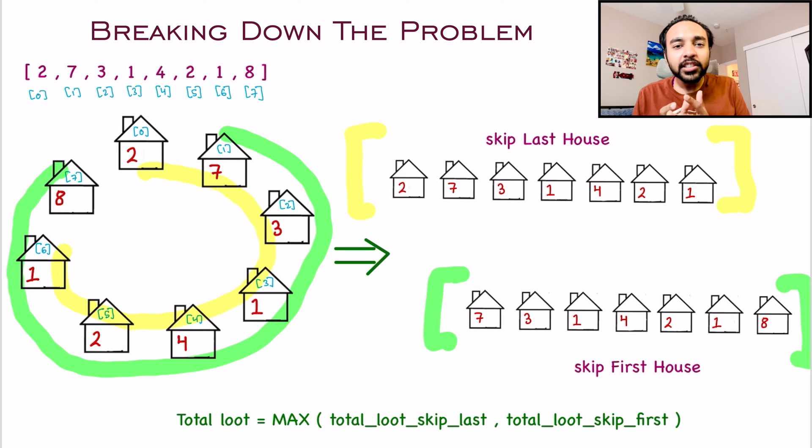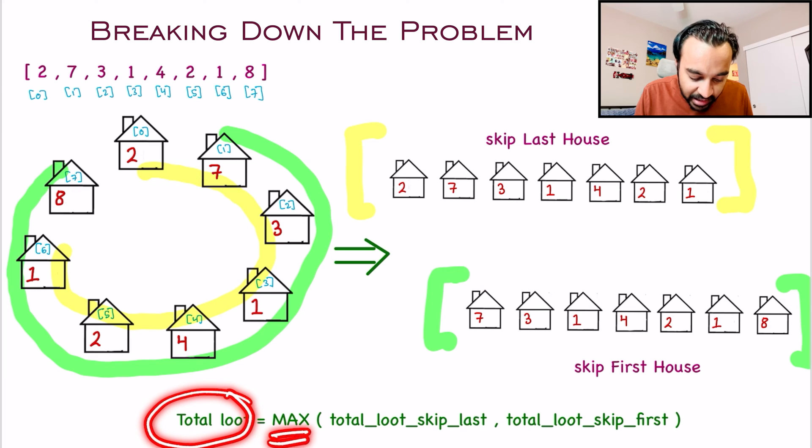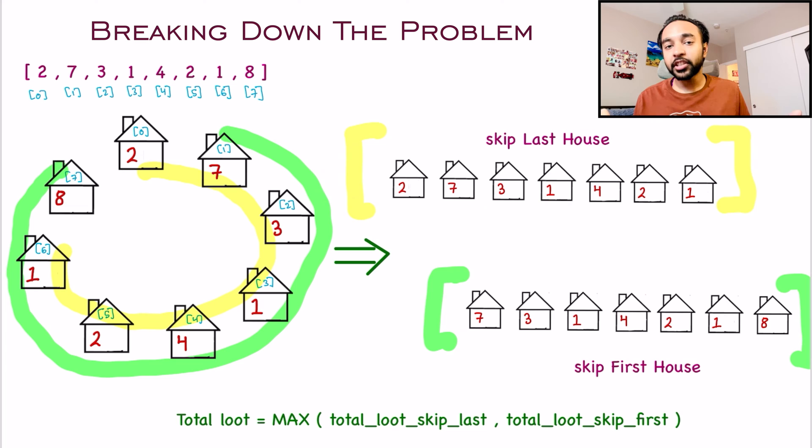So that is what makes this problem so easy. Your total loot will be the maximum of both of these conditions when you are skipping the last house and when you are skipping the first house. Just evaluate both of them and the maximum of these values will be your answer.